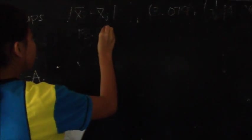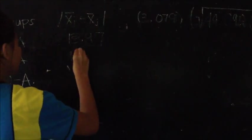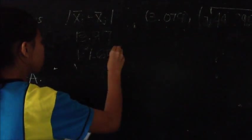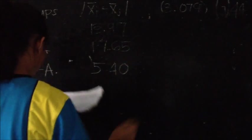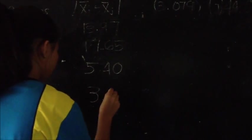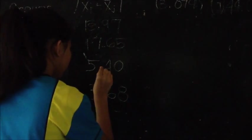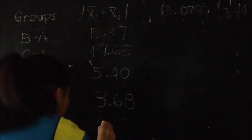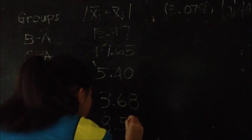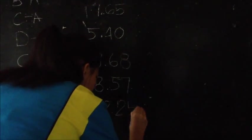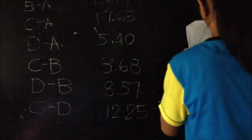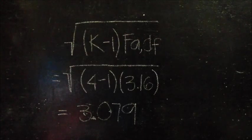Pair B and A is equal to 13.97, Pair C and A is equal to 17.65, Pair D and A equals 5.40, Pair C and B is equal to 3.68, Pair D and B is equal to 8.57, and Pair C and D is equal to 12.25.